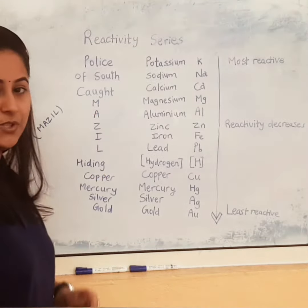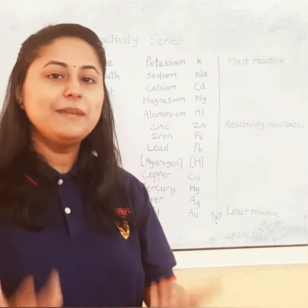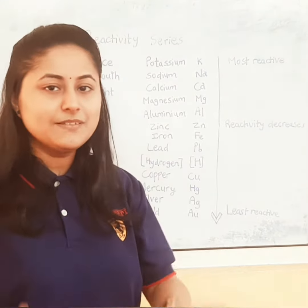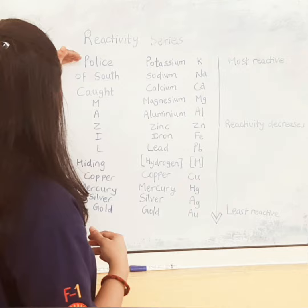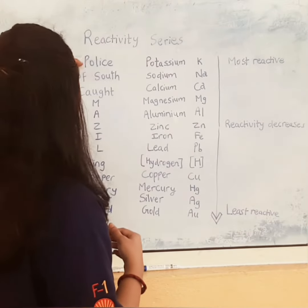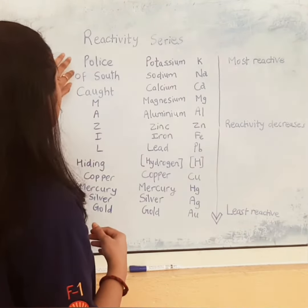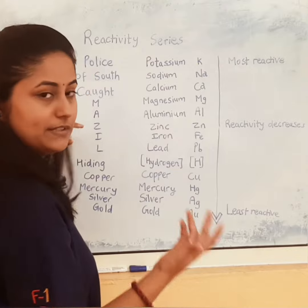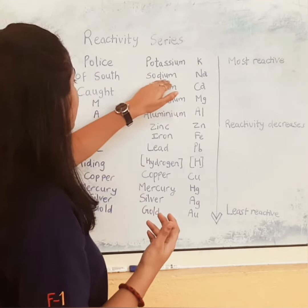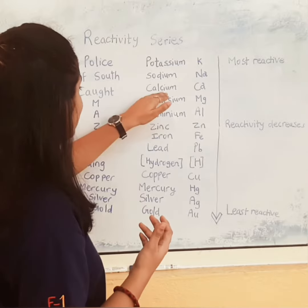See: 'Police of South caught Mazile.' Now, Mr. Mazile you can think of as a person's name. Police meaning potassium, 'of' is for — so 'police of south': South is sodium, 'caught' is calcium.